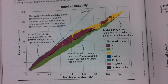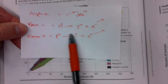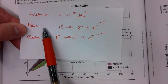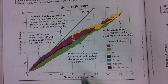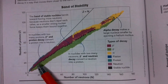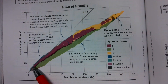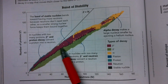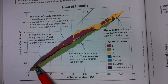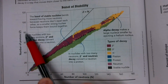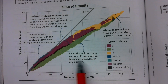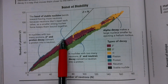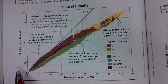Just referring to the decay types we learned before: alpha, beta minus, and beta positive. Now let's look at our chart. We have this black line, which means that's a stable arrangement for those atoms, because the protons show us the atomic number — what the atom is — and the number of neutrons gives us the different types of isotopes.